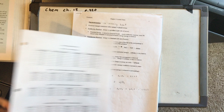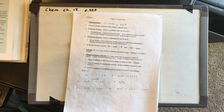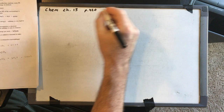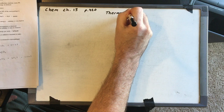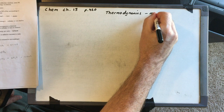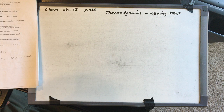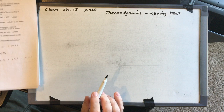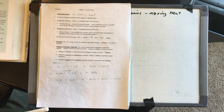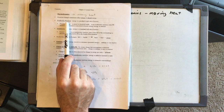Starting at the top of your notes, this chapter is called thermodynamics. Thermodynamics just means moving heat. We are following the path of heat in a chemical reaction. Dynamic just means motion, thermo means heat. Chemical changes either release or absorb energy, and in an exothermic reaction, energy is a product.